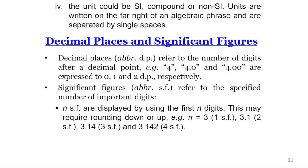If we take the case of pi, it can be written as 3 to one significant figure, 3.1 to two significant figures, and 3.142 to four significant figures. In fact, in some cases this will require rounding down or up.